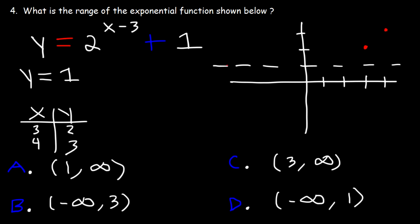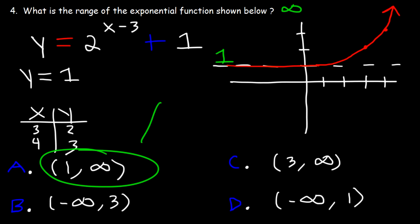The graph starts from the horizontal asymptote and then increases. The range has to do with the y values. The lowest y value is the horizontal asymptote — it's one — and the highest is infinity, but it doesn't include one. So the range is from one to infinity. So A is the answer.